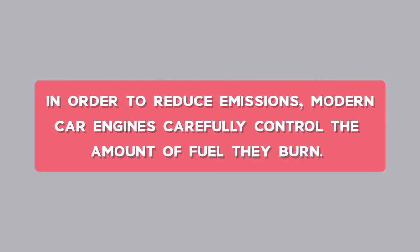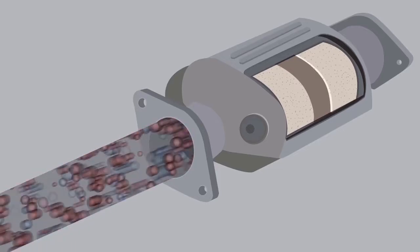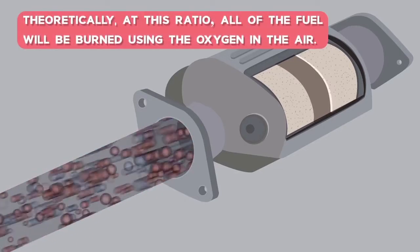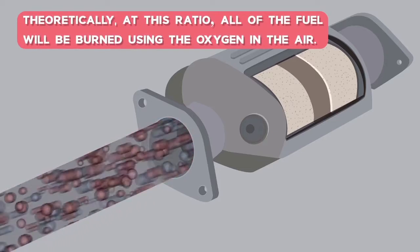In order to reduce emissions, modern car engines carefully control the amount of fuel they burn. They try to keep the amount of air and fuel in strict recipe. Theoretically, at this ratio, all of the fuel will be burned using the oxygen in the air.